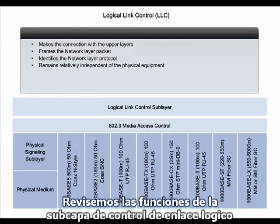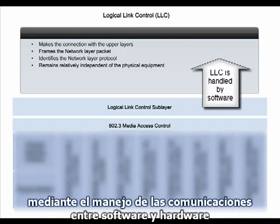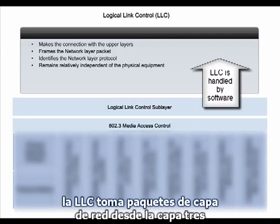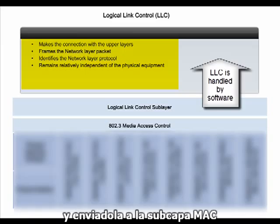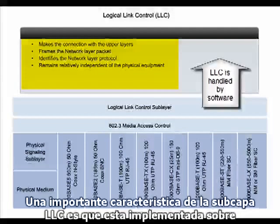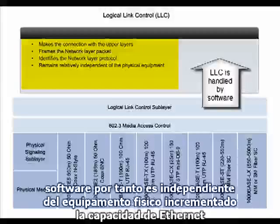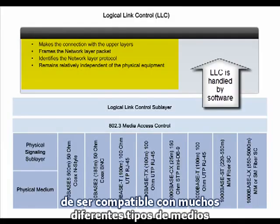The LLC's primary responsibility is to communicate with the upper levels of the OSI stack by handling the communications between software and hardware. The LLC sub-layer takes network layer packets from Layer 3, identifies the protocol, and then encapsulates the packet with control information, thus creating a Layer 2 frame, and sends it to the MAC sub-layer. An important feature of the LLC sub-layer is that it is implemented in software and thus independent of physical equipment, increasing Ethernet's capability to be compatible with many different types of media.